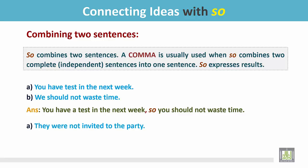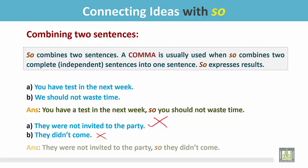Another example: 'They were not invited to the party. They didn't come.' Both sentences are negative. They are joined by 'so': 'They were not invited to the party, so they didn't come.' Both negative sentences are joined by 'so', and we should not forget to put a comma before 'so'.